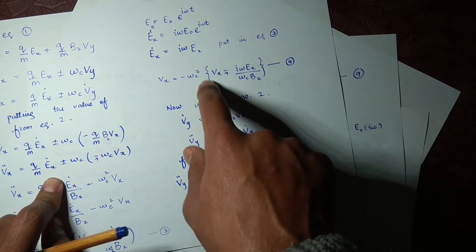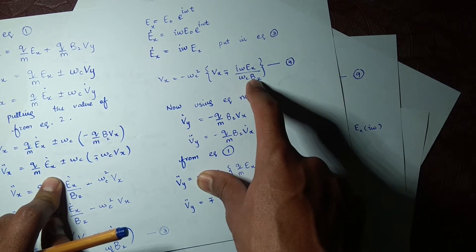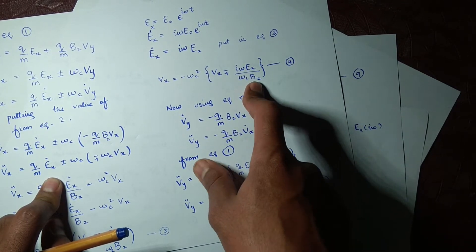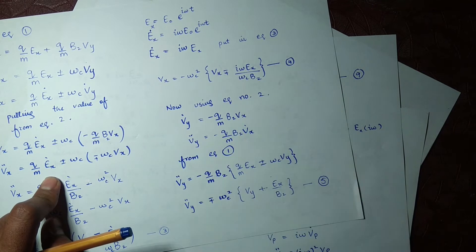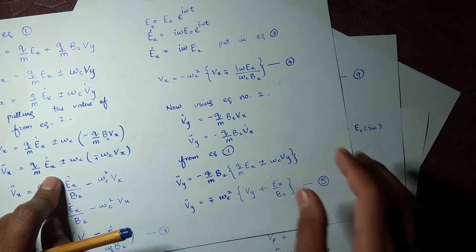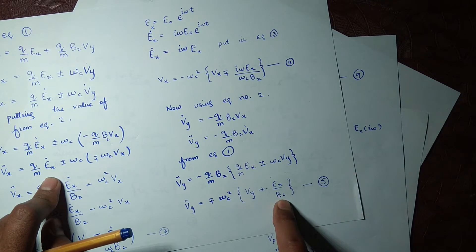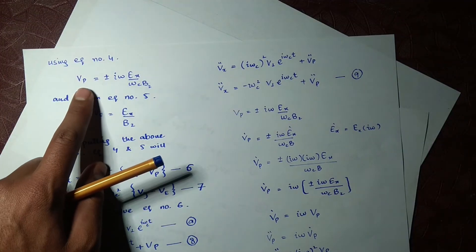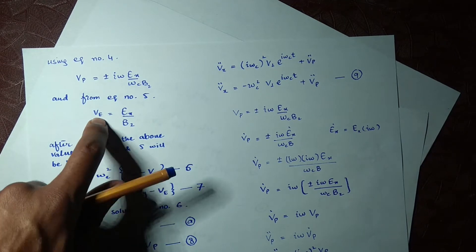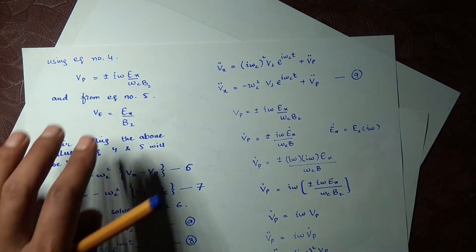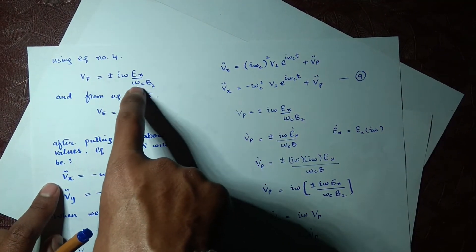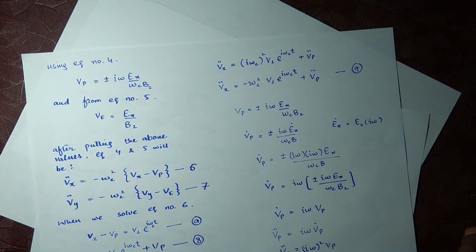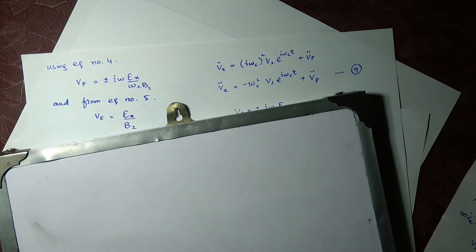This extra term in v_y is now called v_e, and the extra term in v_x is called v_p. This v_p arises because of the time-varying electric field. Let's name these as v_p and v_e respectively, and discuss how v_p only arises when we have a time-varying electric field. First, let's write out the formula.